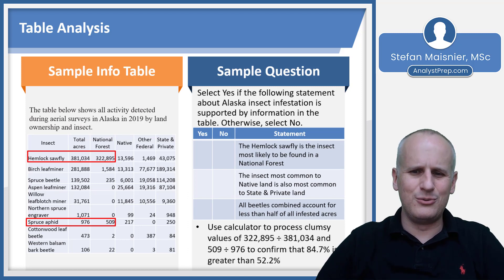Then we can just use the calculator to process the clumsy values of 322,895 divided by 381,034 and 509 divided by 976 to confirm that yes, 84.7% is greater than 52.2%. And we would select yes for the first statement.